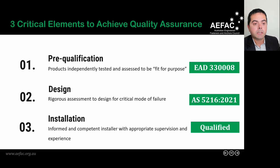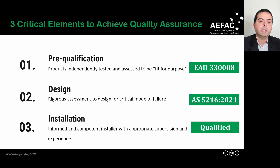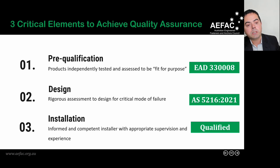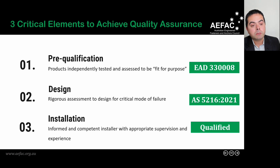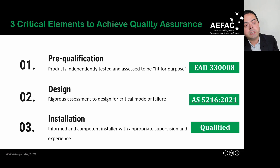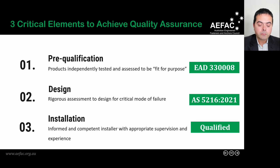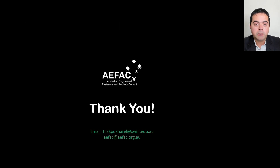In conclusion, the three critical elements for quality assurance are: pre-qualification (product must be independently tested and assessed per EAD 330008); design (consider all possible loading conditions and failure modes — for anchor channels there are 28, all covered in AS 5216 2021); and installation (AS 5216 assumes installation is done by a qualified person who knows what they are doing). Following all three elements is essential to achieve a good quality connection.